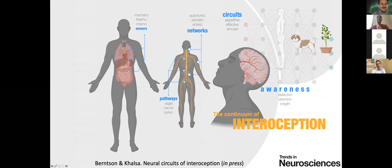Interoception is a neural process that traverses sensors. Examples of interoceptive sensors include mechanoreceptors, thermoreceptors, chemoreceptors, osmoreceptors, humoral receptors, glucoreceptors, and free nerve endings located throughout the body. These are connected to pathways: vagal, cranial, pelvic, sacral, spinothalamic, and somatosensory pathways, which relay information to networks. Networks are groupings of interconnected nerve cells, such as the central and peripheral autonomic networks, enteric networks, thalamocortical networks, hypothalamic, limbic, sensory motor, salience, and default mode networks.